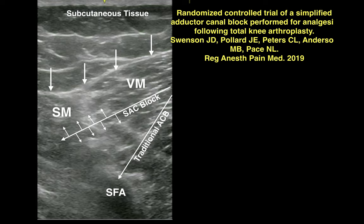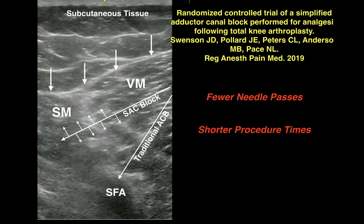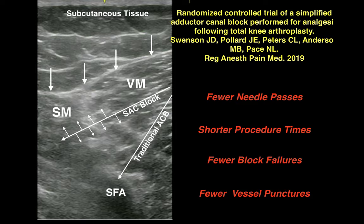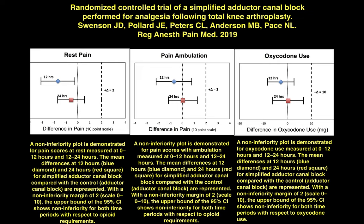The simplified adductor canal block has been compared to traditional adductor canal block in prospective randomized clinical trials for patients having total knee arthroplasty. Compared to traditional adductor canal block, blocks performed using the simplified technique have fewer vessel passes, shorter procedure times, fewer block failures, and fewer vessel punctures. Non-inferiority plots for rest pain, pain with ambulation, and oxycodone use at 12 and 24 hours after surgery show non-inferiority for pain control and opioid requirement in patients receiving the simplified adductor canal block compared with traditional adductor canal block.